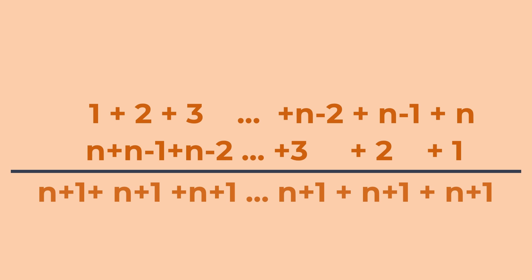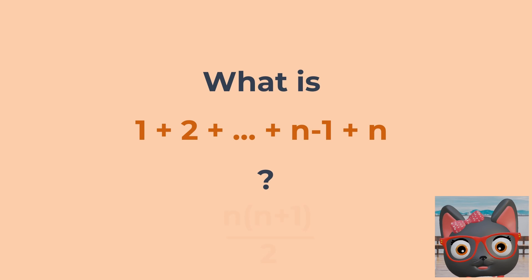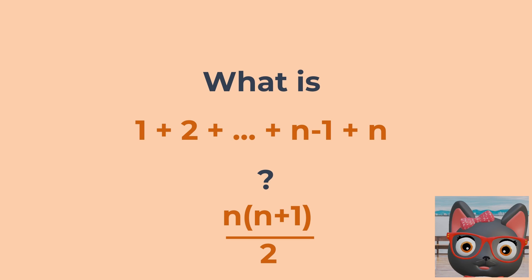Just like last time, we see we get n plus 1 plus n plus 1 plus so on and so forth, n times. So that's n times n plus 1. So what's 1 plus 2 plus all the way to plus n minus 1 plus n? n times n plus 1 divided by 2.